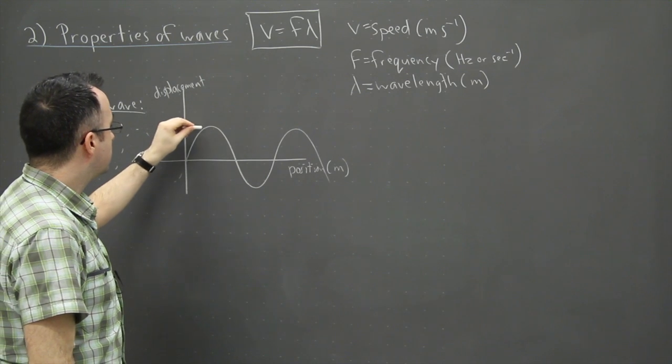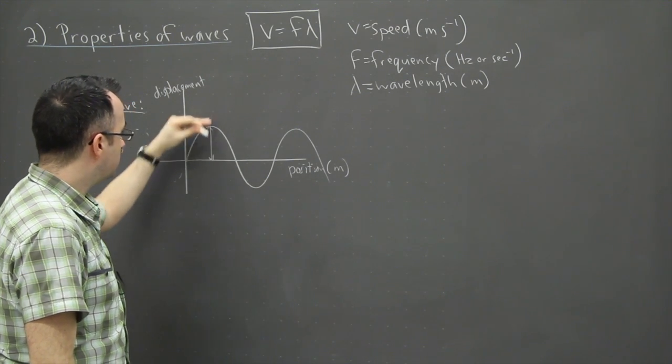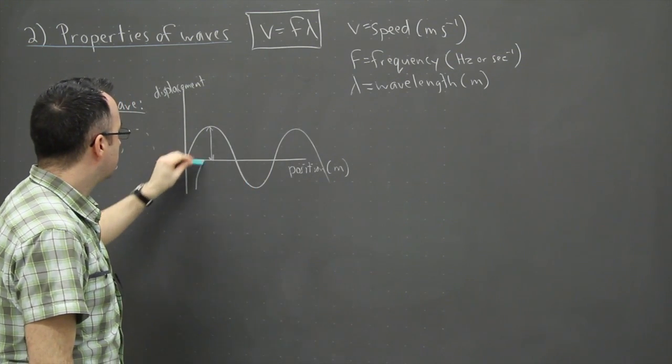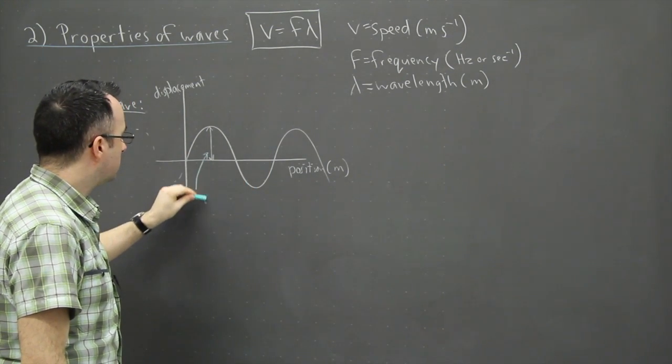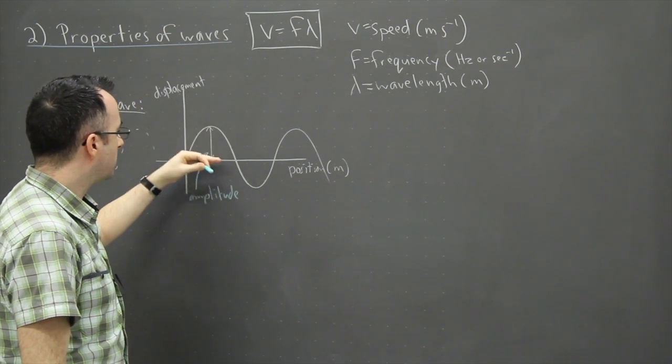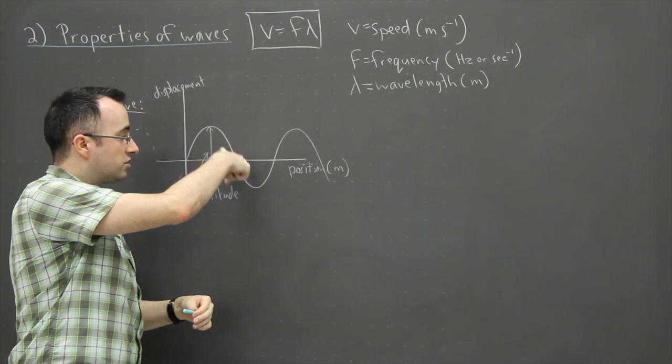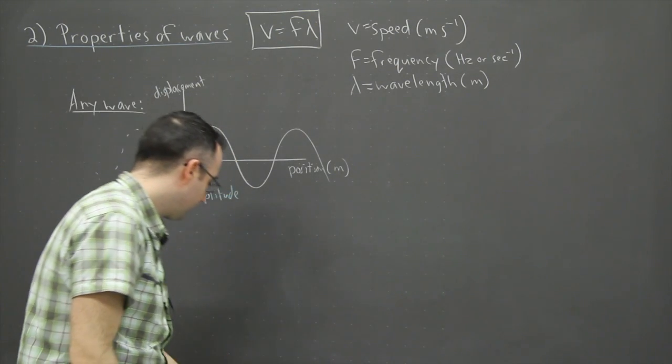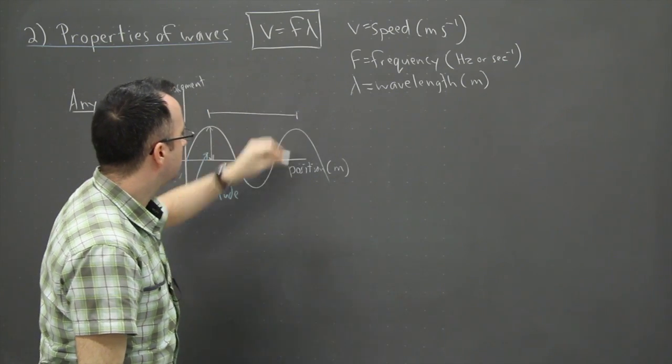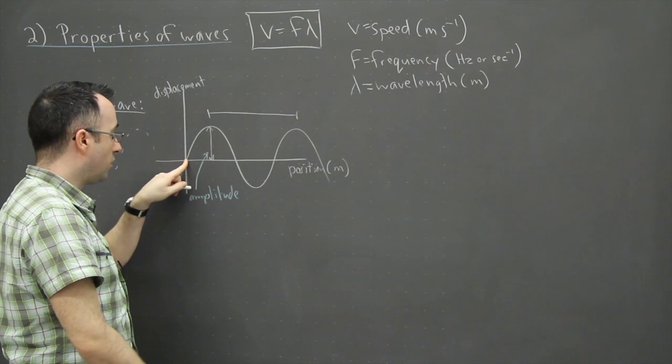If I graph that, then this height right here from the midpoint to the maximum height we call the amplitude of that wave. From the middle to the top, because it goes up above that value and also goes below by that value—that's the amplitude.